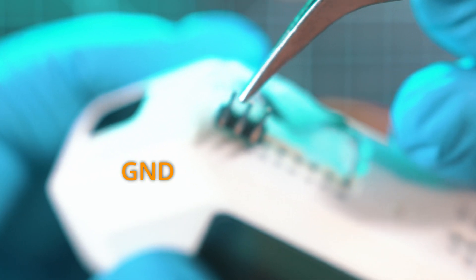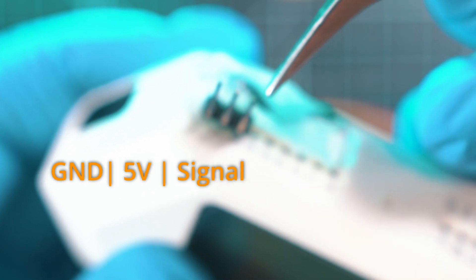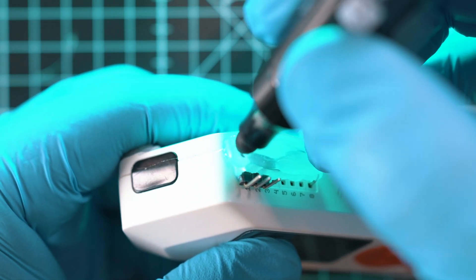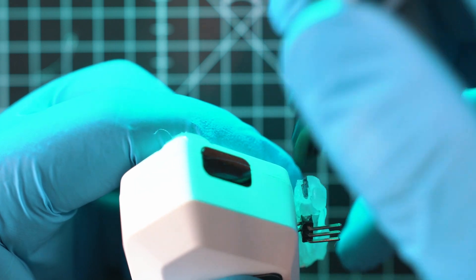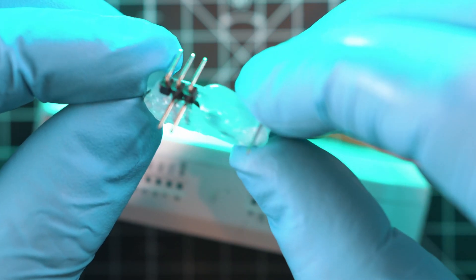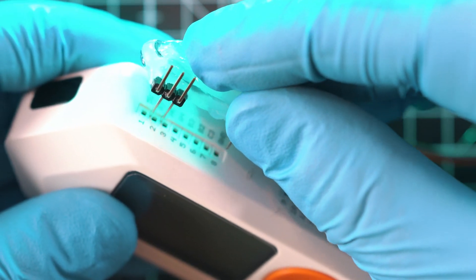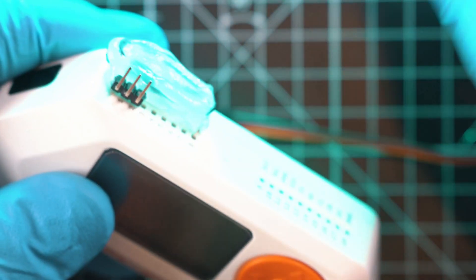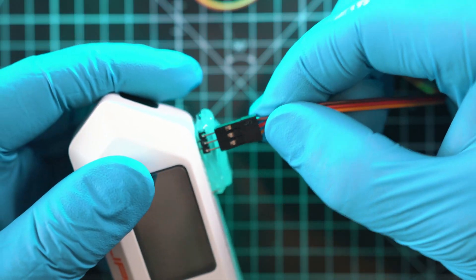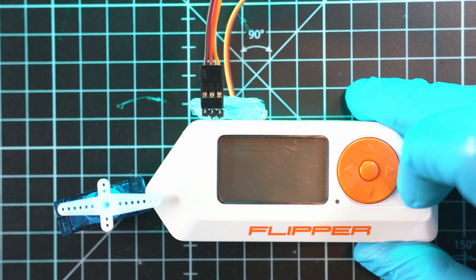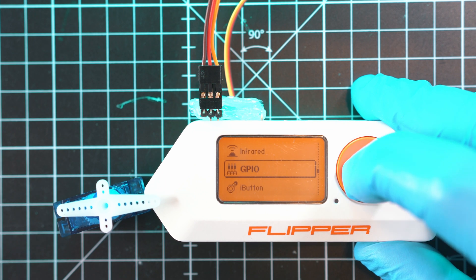From left, ground, 5 volts and signal. I'll mark my ground side. And let's see how this engineering marble looks. Yeah, 10 out of 10. Let's connect it back and connect servo just like this. Turn on flipper and let's do final testing.